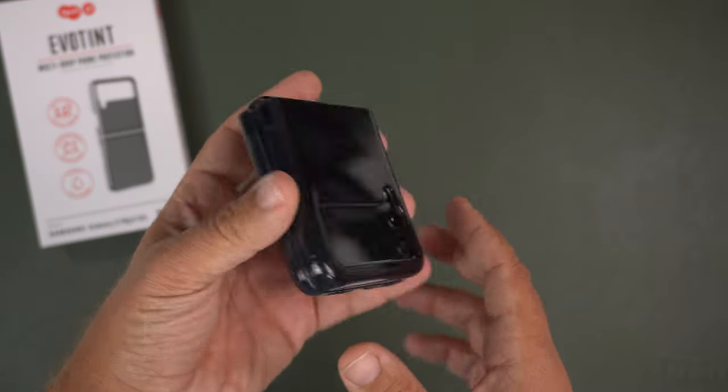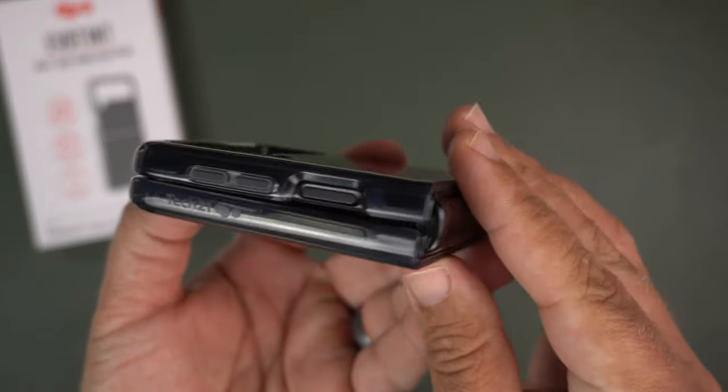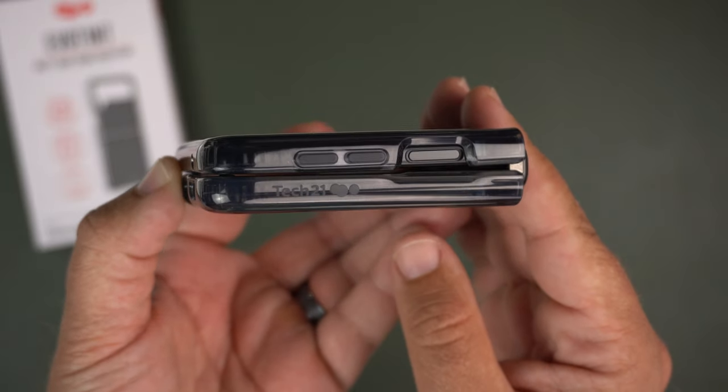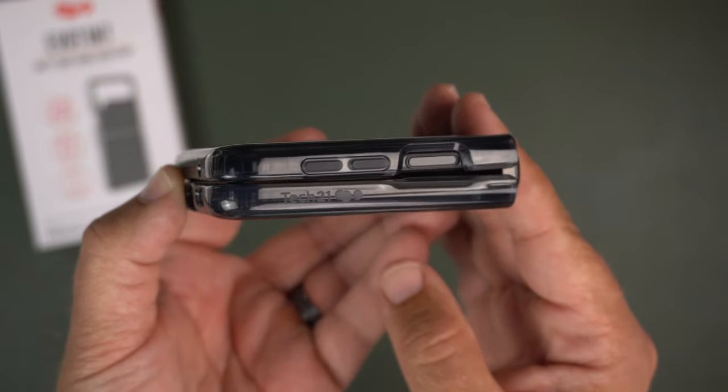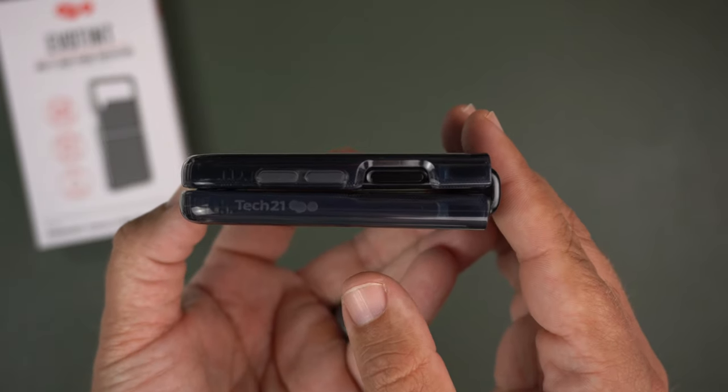Now that I have it closed, let's take a quick look at what it looks like when closed. You can see that black tinted color. You can see the Tech 21 branding and the gap a little bit when I wave my hand through.